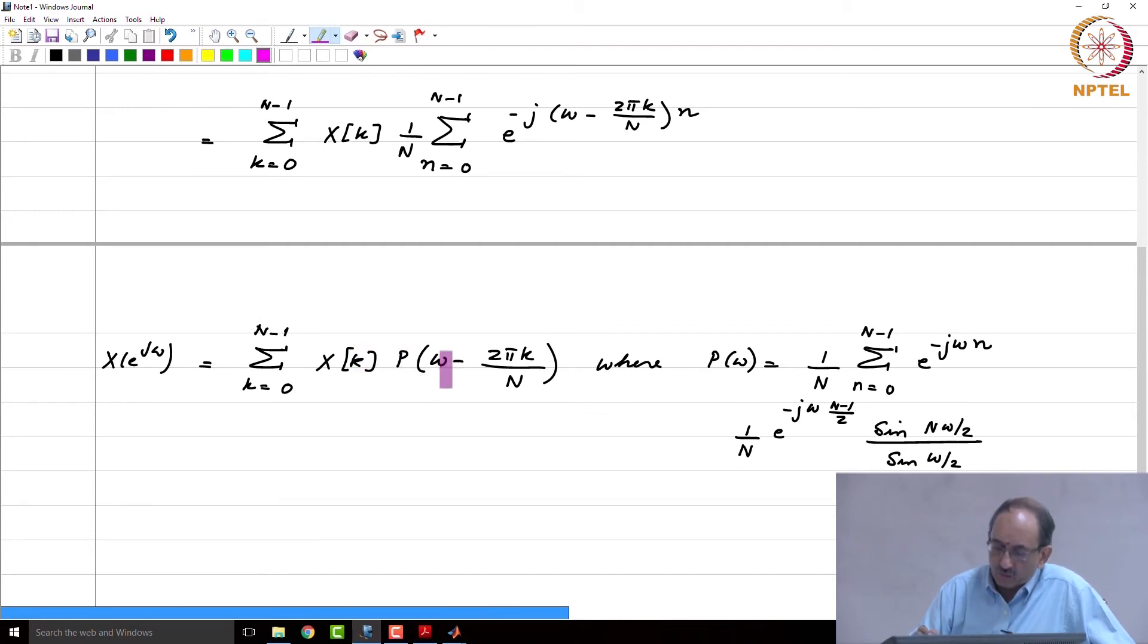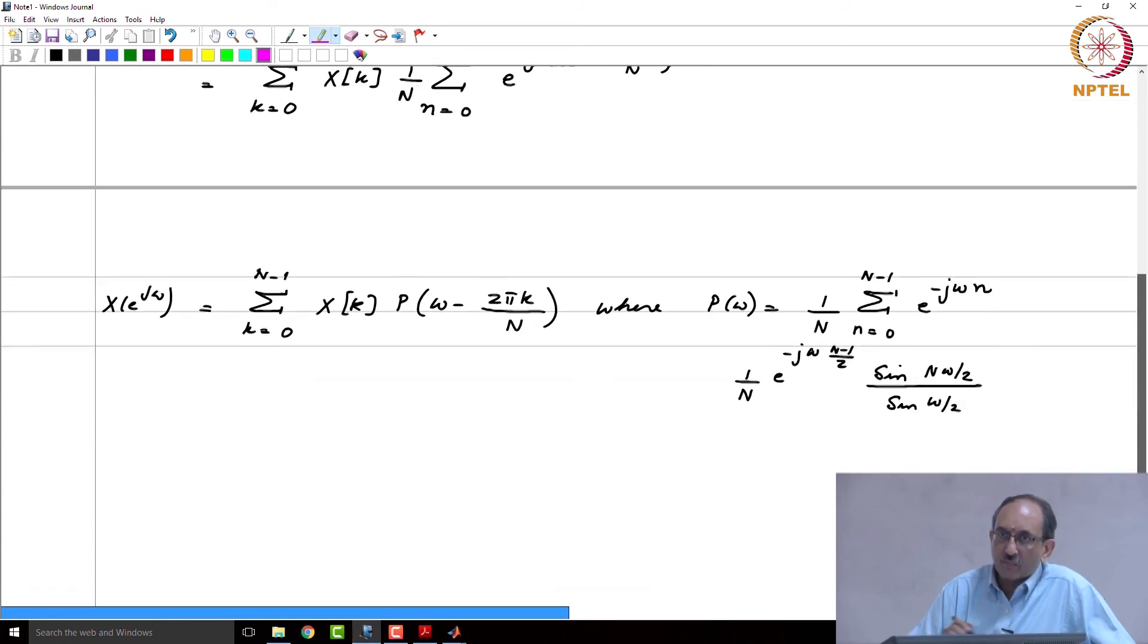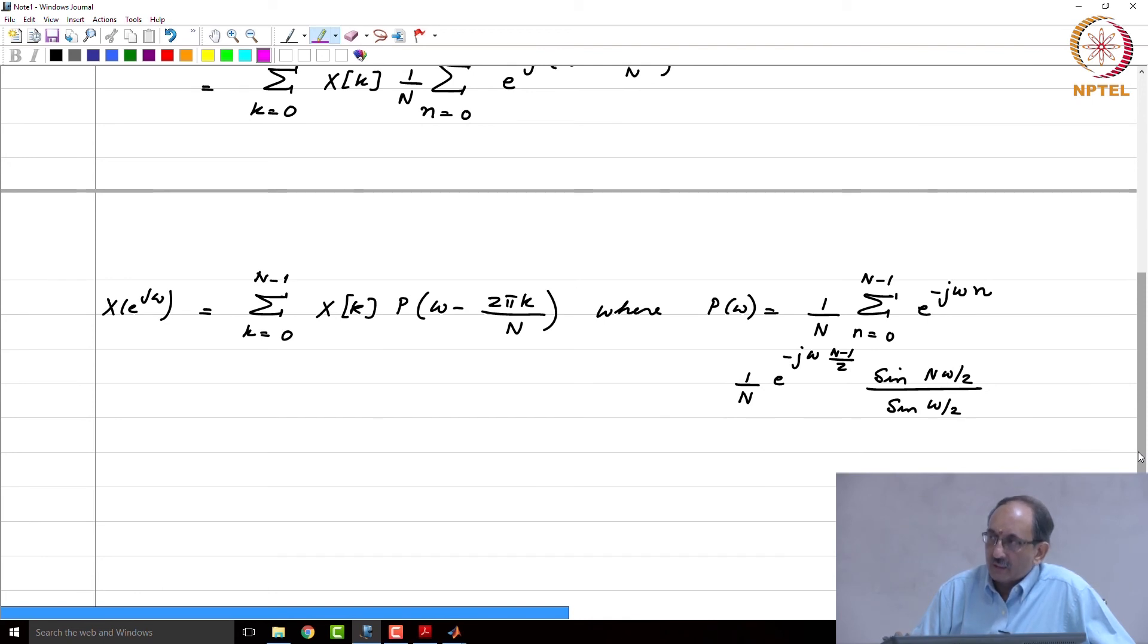And you will be able to easily see that at 0, when omega equals 2 pi k by N, this will have a nonzero value. For every other value of k this will go to 0. So this is no different from what was happening in the sinc interpolation case.